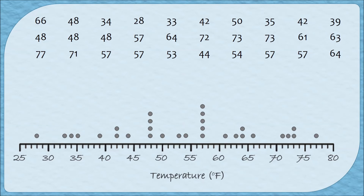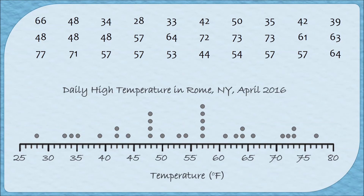And there we go — this is our dot plot. Our dot plot is missing just one thing: it needs to have a name. These values represent high temperatures recorded for Rome, New York in April of 2016, so I'm going to title my graph 'Daily High Temperature in Rome, New York, April 2016.' Depending on the context, you may give it a longer or shorter title. Because this graph is standing by itself, I want to make sure I give as much relevant detail in the title as possible.